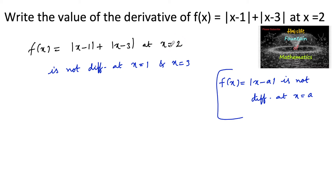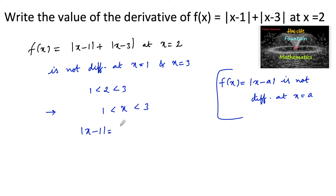For x = 2, which lies between 1 and 3, let us consider the interval where x lies between 1 and 3. Here, |x-1| equals x-1 because x is greater than 1, and |x-3| equals -(x-3) because x is below 3.